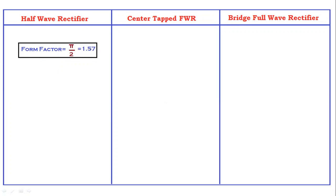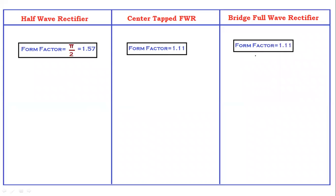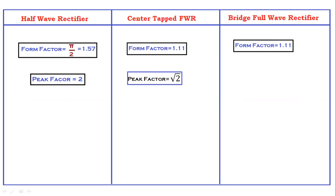The form factor of the half wave rectifier is 1.57. The form factor of the center tapped full wave rectifier is 1.11, and the bridge full wave rectifier is also 1.11. The peak factor of the half wave rectifier is 2. The peak factor of the center tapped full wave rectifier is √2, and the peak factor of the bridge full wave rectifier is also √2.